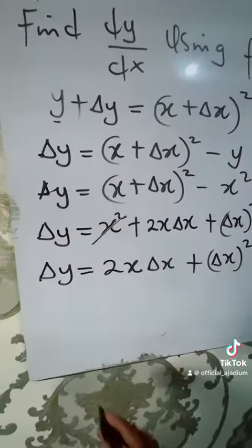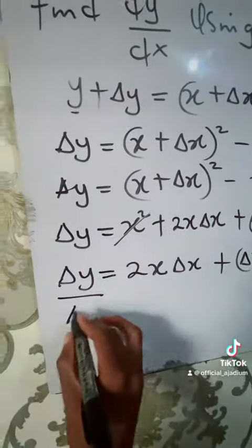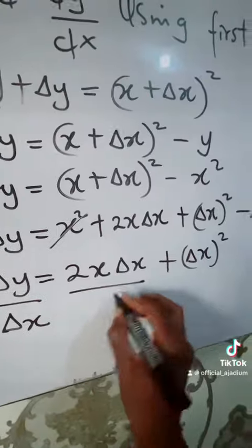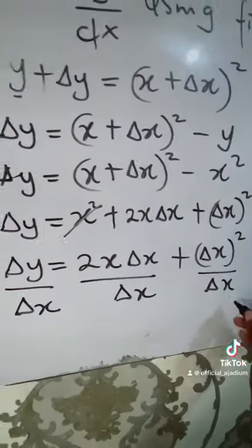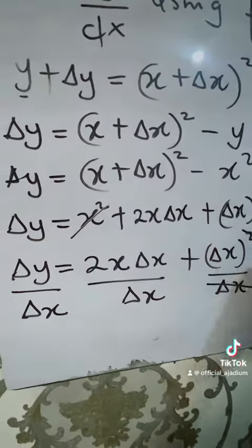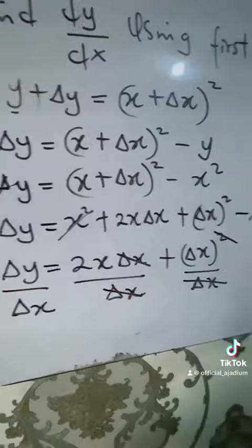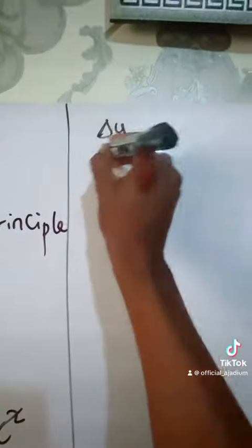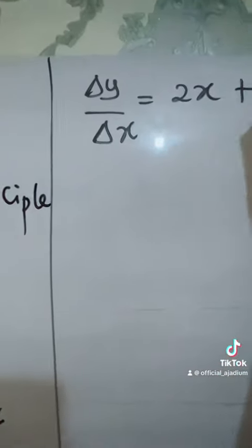The next thing we're going to do is divide through by change in x. So this is over change in x, this is over change in x, and this is over change in x. So change in y over change in x equals 2x plus change in x.